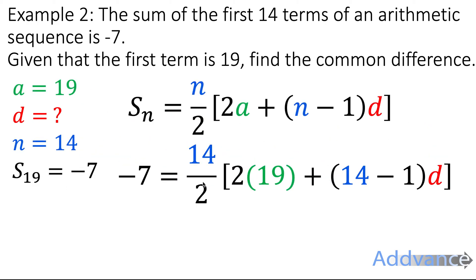So we substitute in those numbers and we get this. And the only thing we don't know is D over here, which means you can solve this equation by simplifying and rearranging. We're going to simplify it first. 14 divided by 2 is 7. 2 times 19 is 38. 14 minus 1 is 13. So we simplified a little bit.